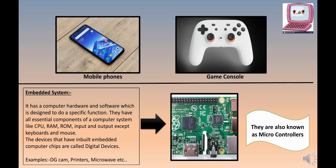Embedded systems have all essential components of a computer system — CPU, RAM, ROM, input and output — except keyboard and mouse. Inside this small chip you have a small CPU, RAM, and everything. It acts as a controller: when you insert it into any device, that device becomes a digital device. It will not have a keyboard and mouse because it is not a general-purpose computer.